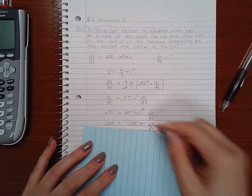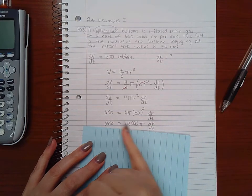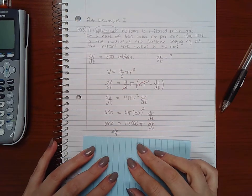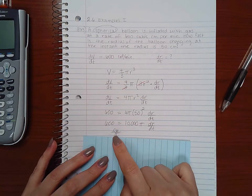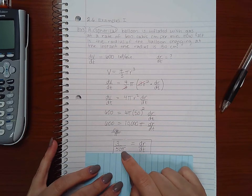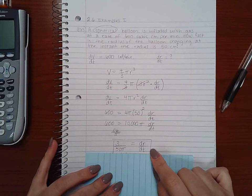Now if I want to solve for dr/dt, I need to divide both sides by 10,000 pi. Well, 600 divided by 10,000 pi is 0.6 pi or 3 over 50 pi. So that's one answer that's acceptable.